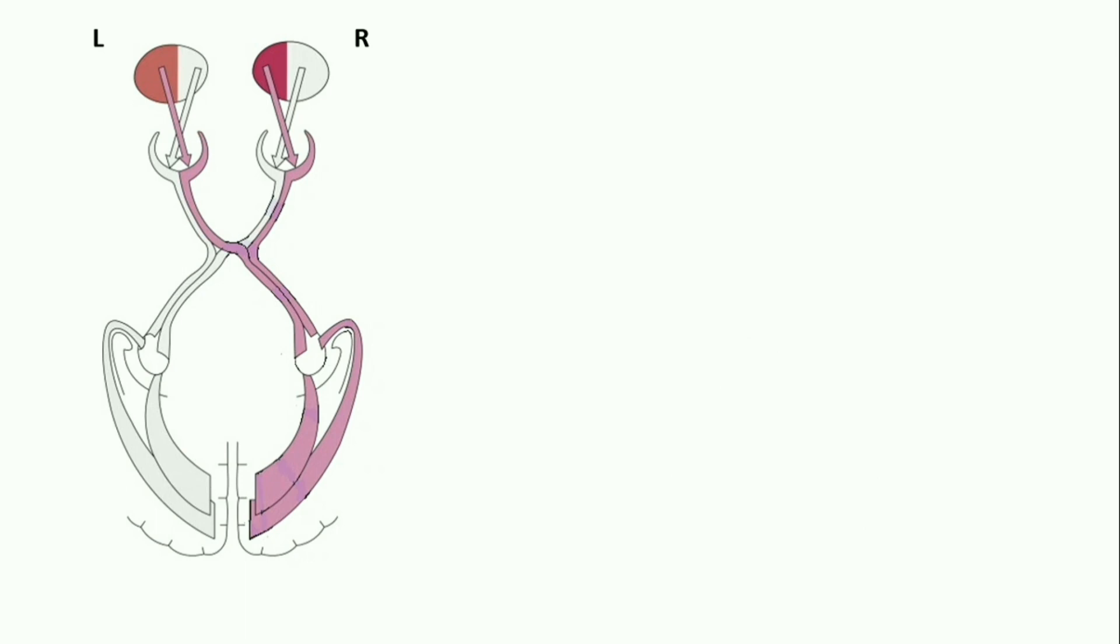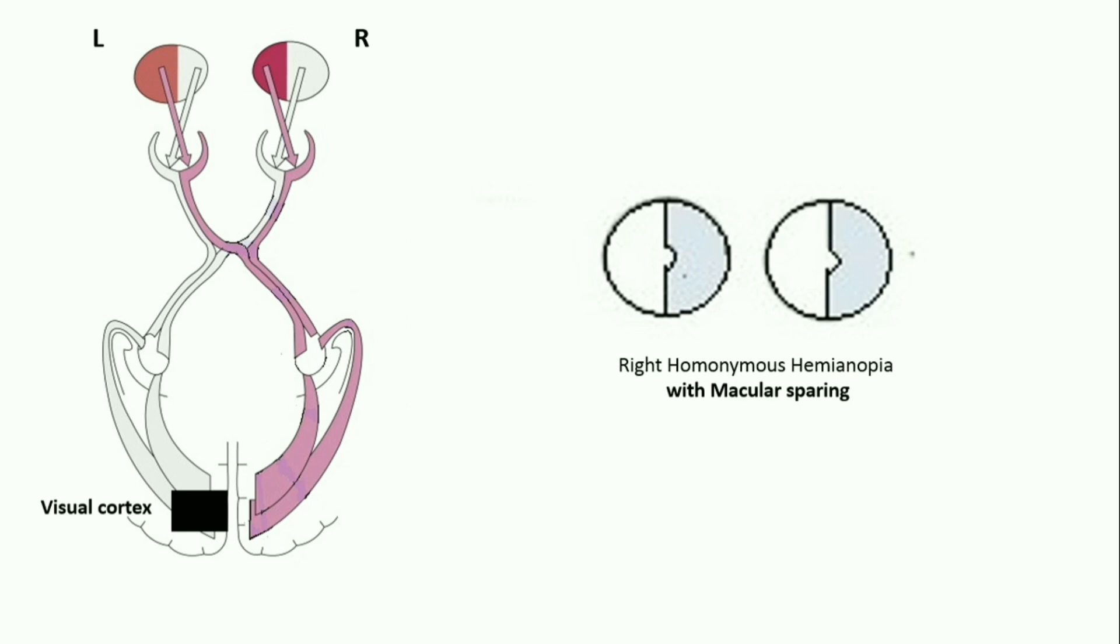Lesion to left visual cortex presents with right homonymous hemianopia but with macular sparing. This phenomenon of macular sparing occurs due to collaterals of middle cerebral artery providing blood to the visual cortex that represents macular vision.